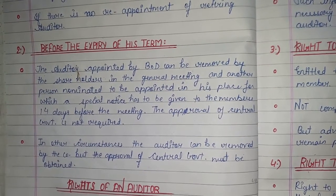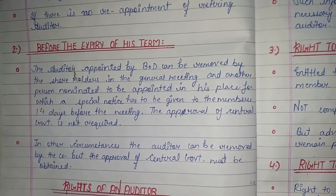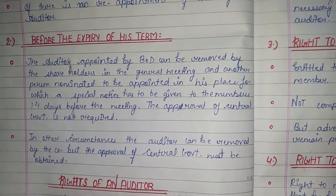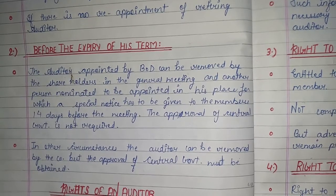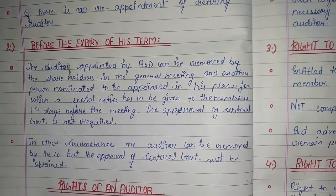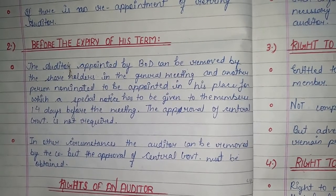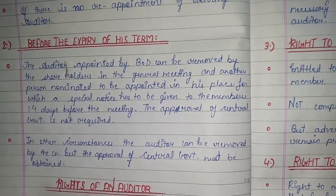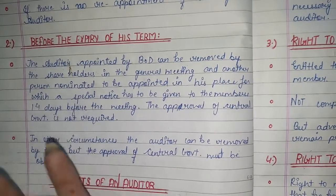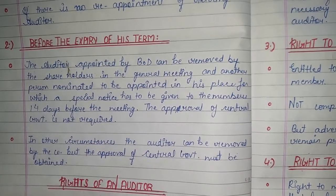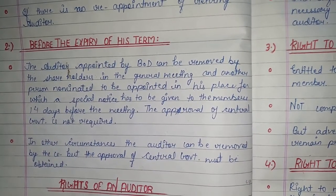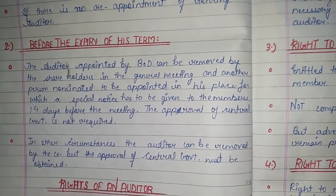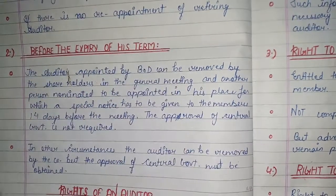If the term is ended before expiry and we are removing them, the Auditor appointed by the Board of Directors can be removed by the Shareholders in the General Meeting. Another person nominated to be appointed in their place must be given a special notice 14 days before the meeting. The approval of the Central Government is not required in this case.